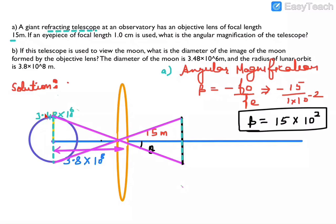This moon is very far, so I made it small. This light is coming in. Since it is at infinity, this distance here is the focal length of the objective lens — this is the focal length of our objective lens.